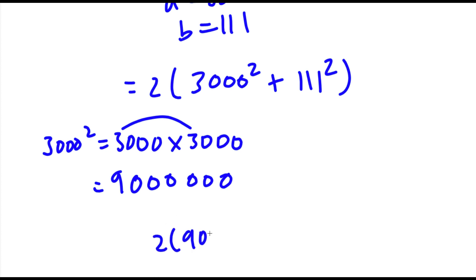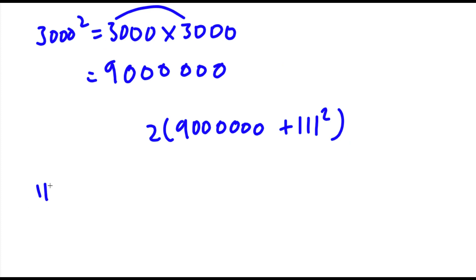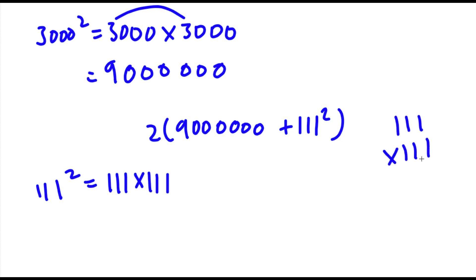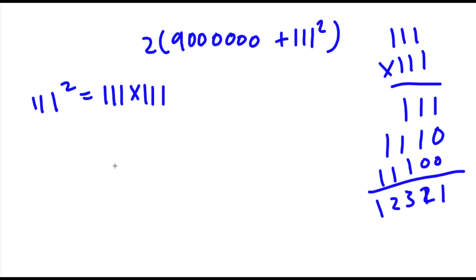Now for 111 squared, this is equal to 111 times 111. Working through the multiplication, we get 1, 2, 3, 2, 1 — so 111 squared equals 12,321.